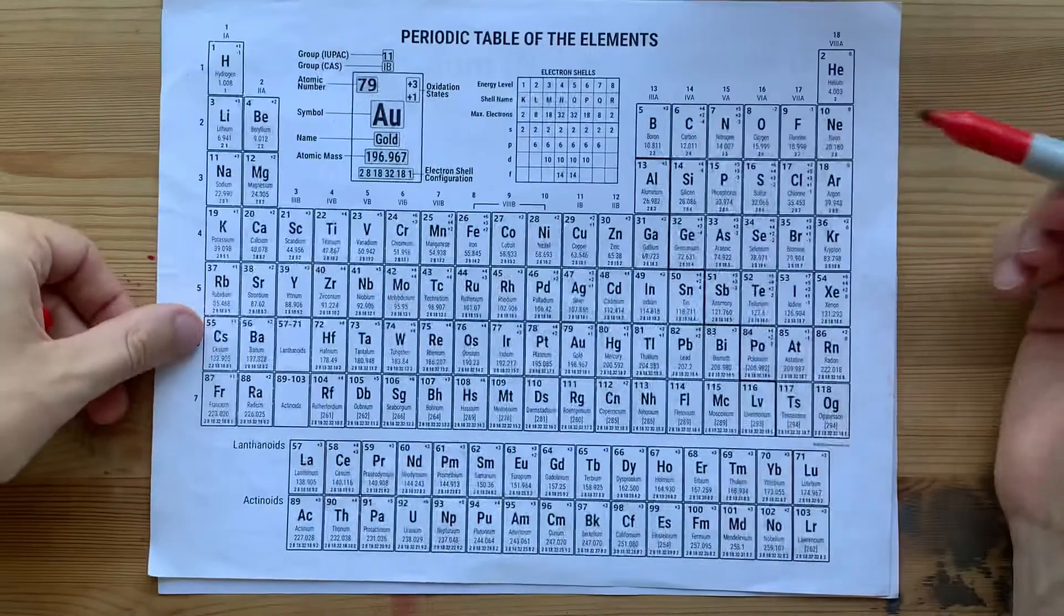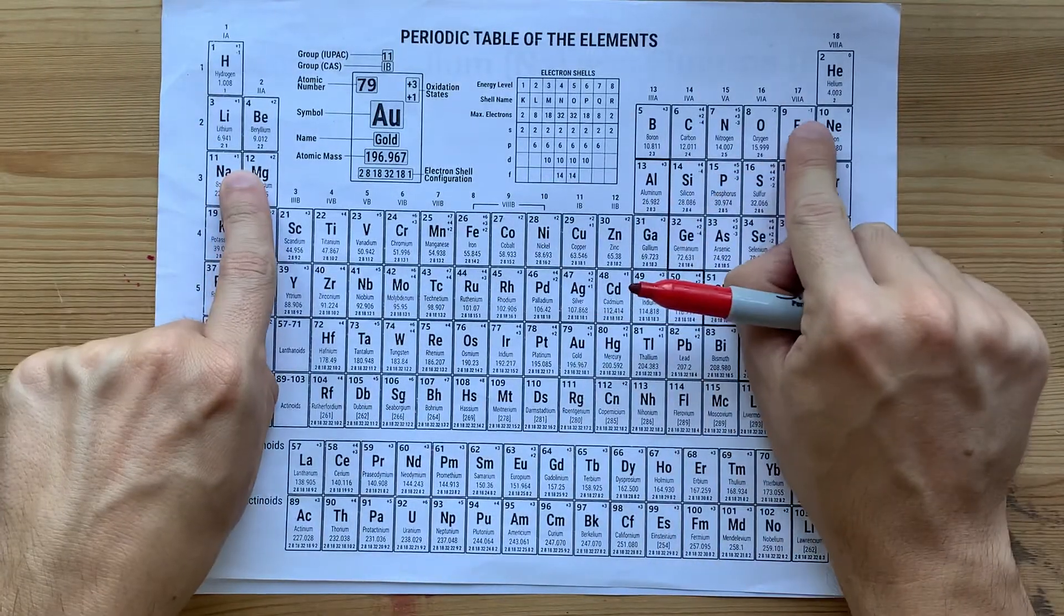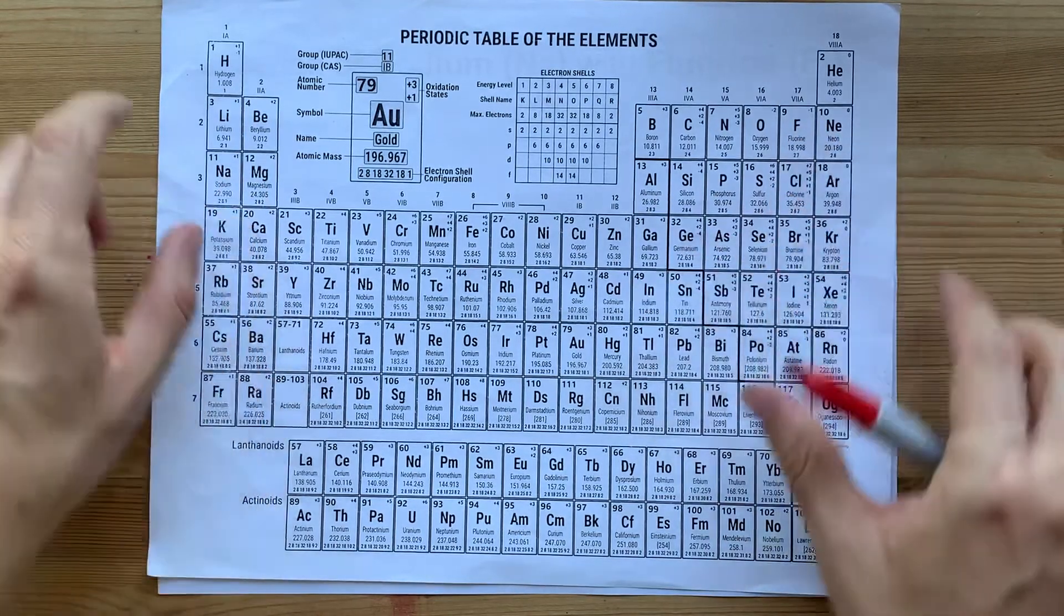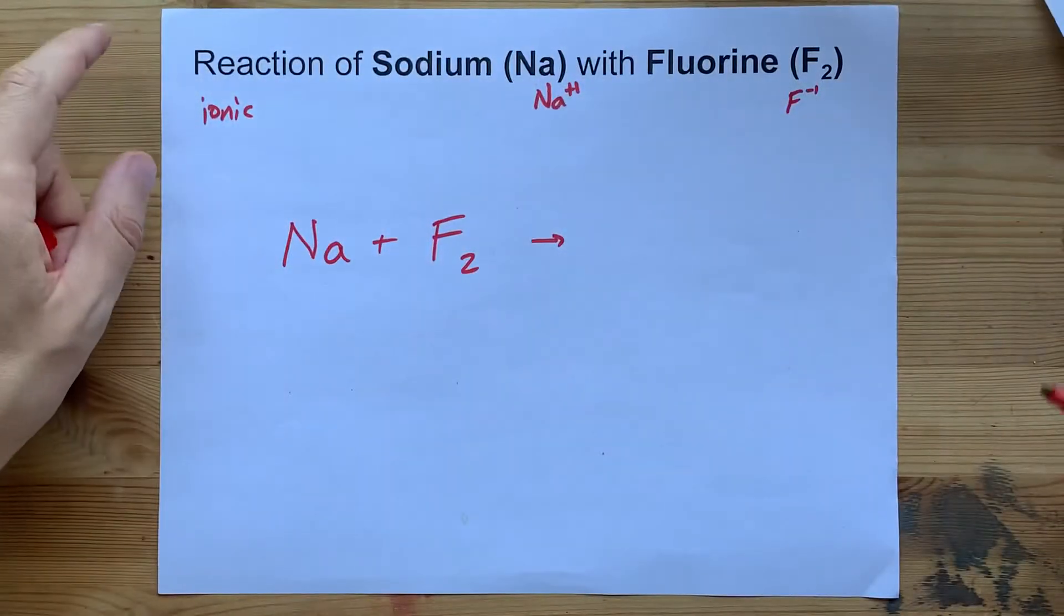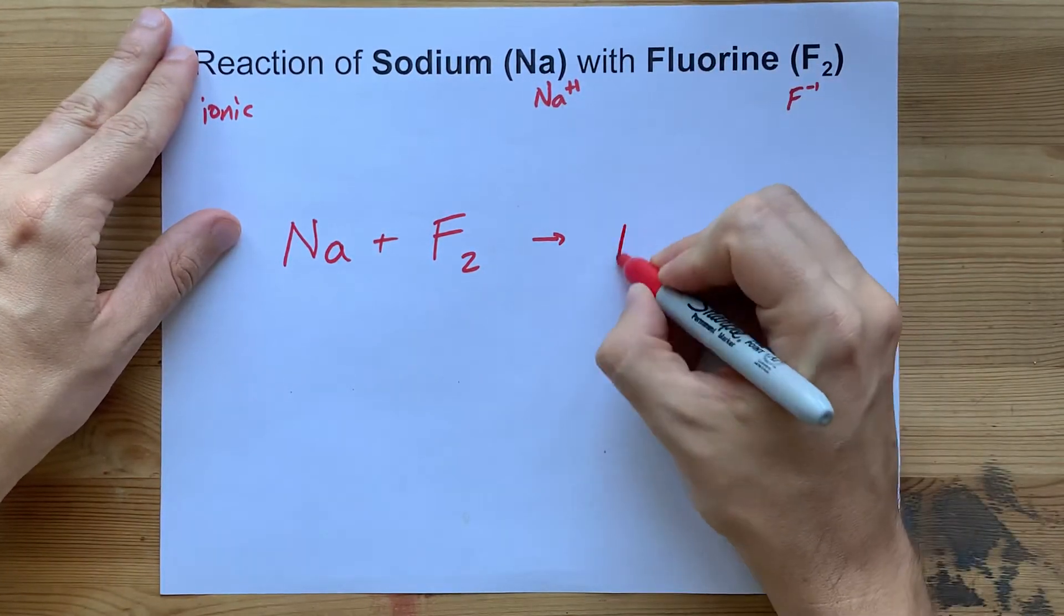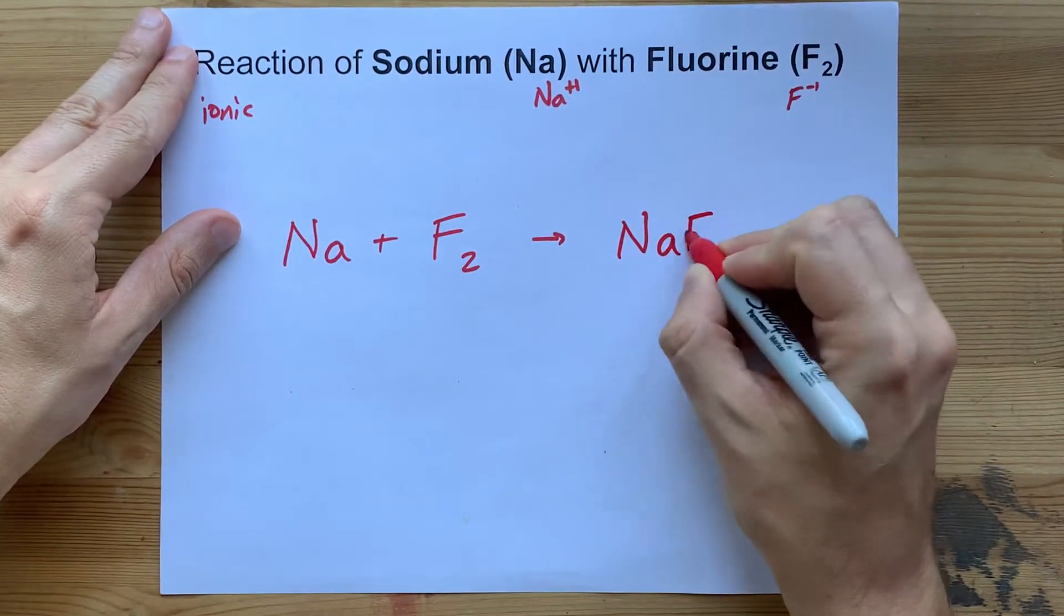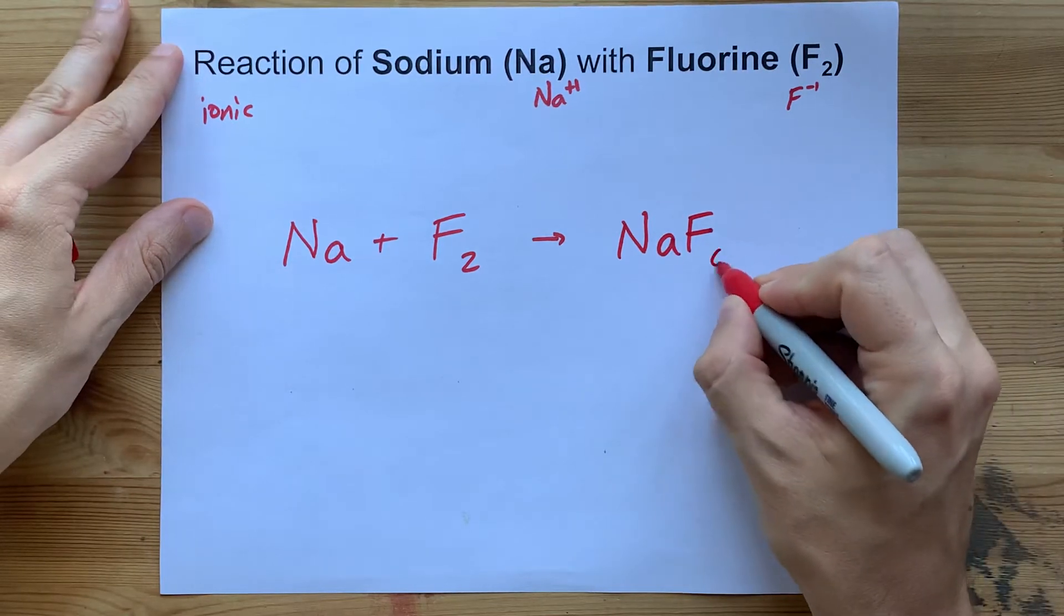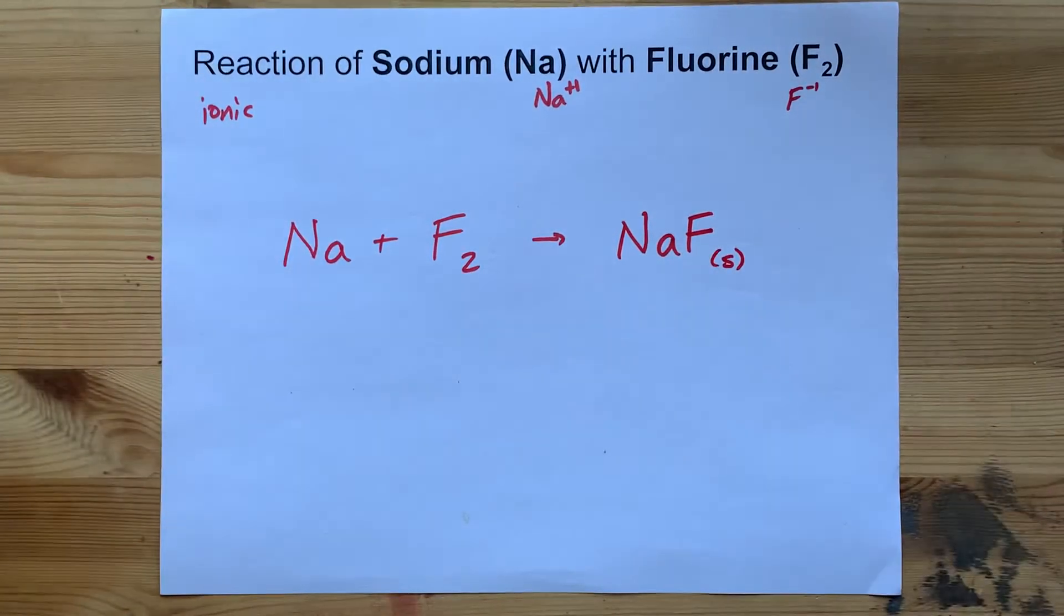If you wanted to know where I got those numbers, they're the preferred charges on sodium and fluorine based on the column that they're in. So you're going to end up crisscrossing those charges. You end up with NaF, that is sodium fluoride, which is a solid at room temperature.